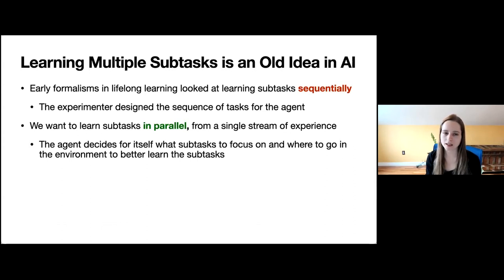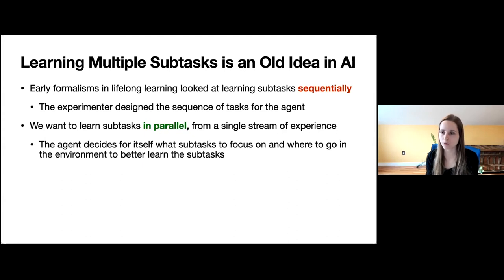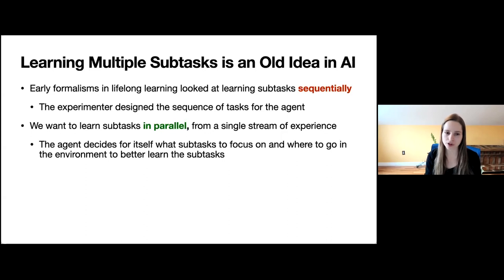There's one critical difference about what we can do going forward when it comes to learning all these subtasks: whether to do it sequentially or in parallel. Previously, tasks were learned sequentially — first learn tennis, then learn badminton — and the experimenter would design the sequence for the agent. What we'd really like is for the agent to learn many things in parallel without this sequencing. That raises an important sub-problem: the agent has to decide for itself which subtasks to focus on and where to go in the environment to better learn them.